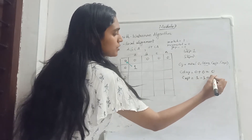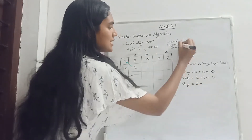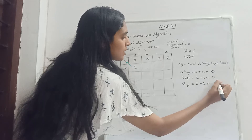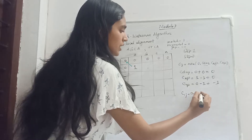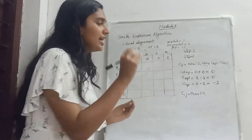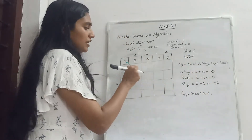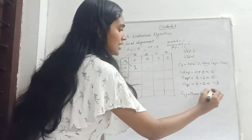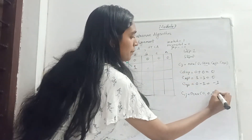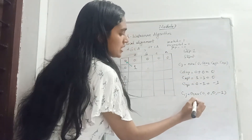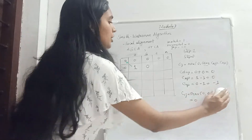Gap penalty is equal to 0. C_up previous up element is 0 minus gap penalty, minus 1. So C_ij will be max of: 0, C_diagonal (previous diagonal element plus the score = 0), C_left plus gap penalty = 0, and C_up plus gap = minus 1. Hence it is 0, 0, 0. The direction is marked, next element is 0.